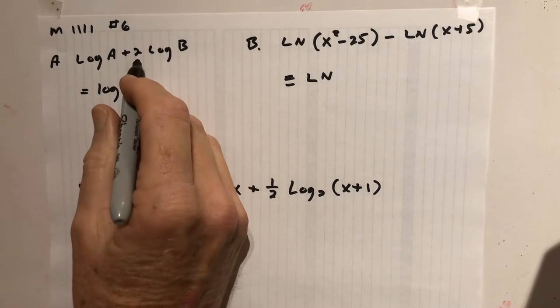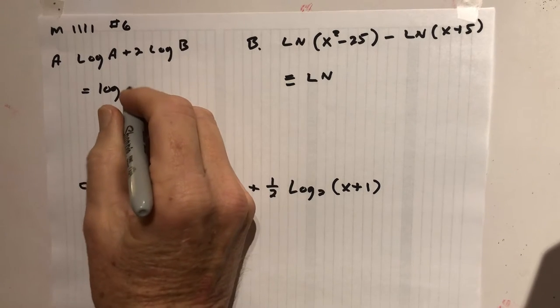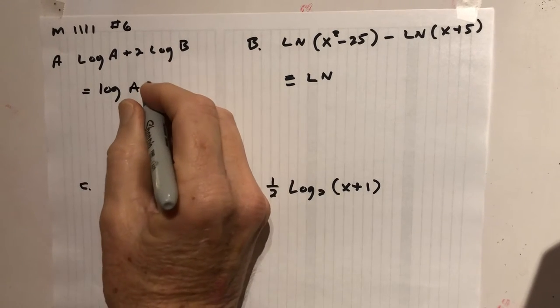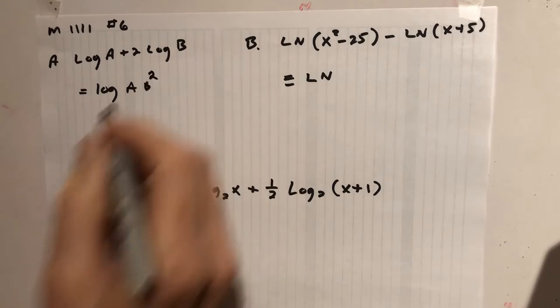So we're going to multiply them, but there's a two here. So you're gonna make the two an exponent. So it's gonna be log of A, log of B, but the B squared.